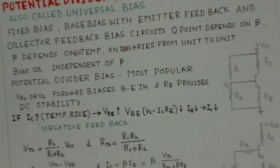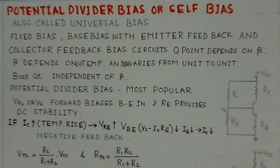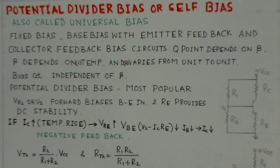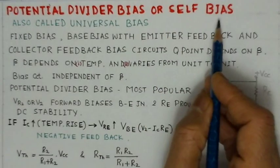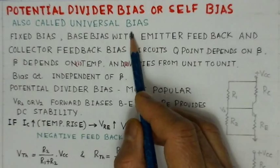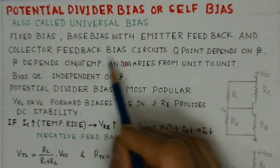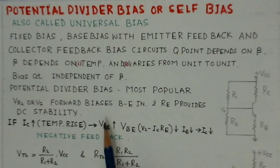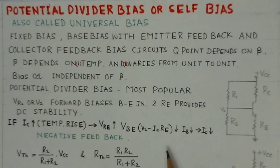Among the various biasing arrangements, the best is the potential divider bias, also called self-bias. It is also called universal bias. Other bias arrangements — such as fixed bias, base bias with emitter feedback, and collector feedback bias circuits — have Q points that depend on beta. Since beta depends on temperature and varies from unit to unit, the Q point is never fixed and varies with those arrangements.